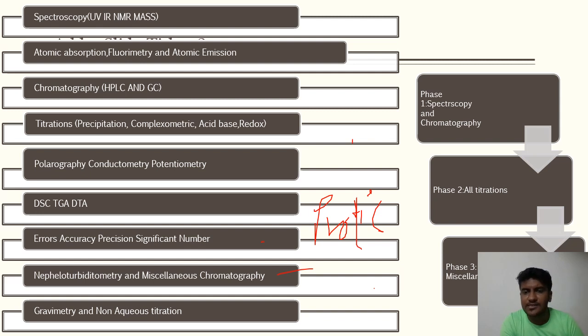Dividing these into three phases: the first phase will be the phase of spectroscopy and chromatography, the second phase will be the phase of all the titrations that are to be performed, and the third phase will be of the miscellaneous categories that are left, like errors, nephelometry and all.